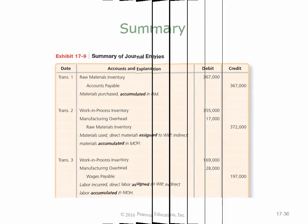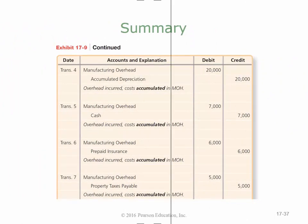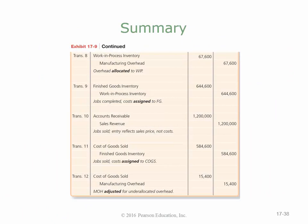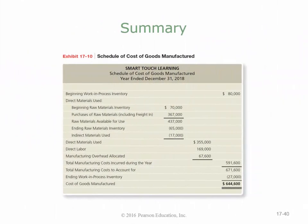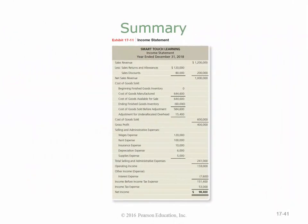Here's a summary of all the journal entries we just went through, shown as T-accounts. Then there's a schedule of cost of goods manufactured, which we learned in the last chapter: start with beginning work in process, add direct materials used (beginning raw materials plus purchases minus ending), add direct labor, add allocated manufacturing overhead, subtract ending work in process to get cost of goods manufactured. The income statement then shows sales revenue less cost of goods sold equals gross profit, less selling and administrative expenses.